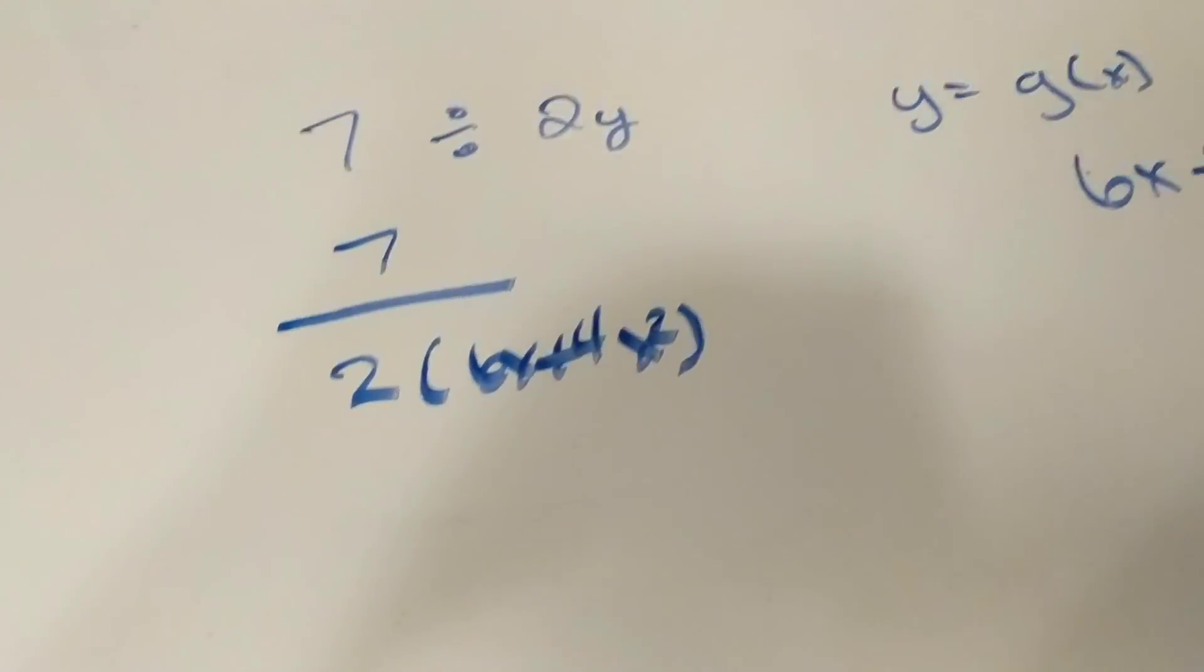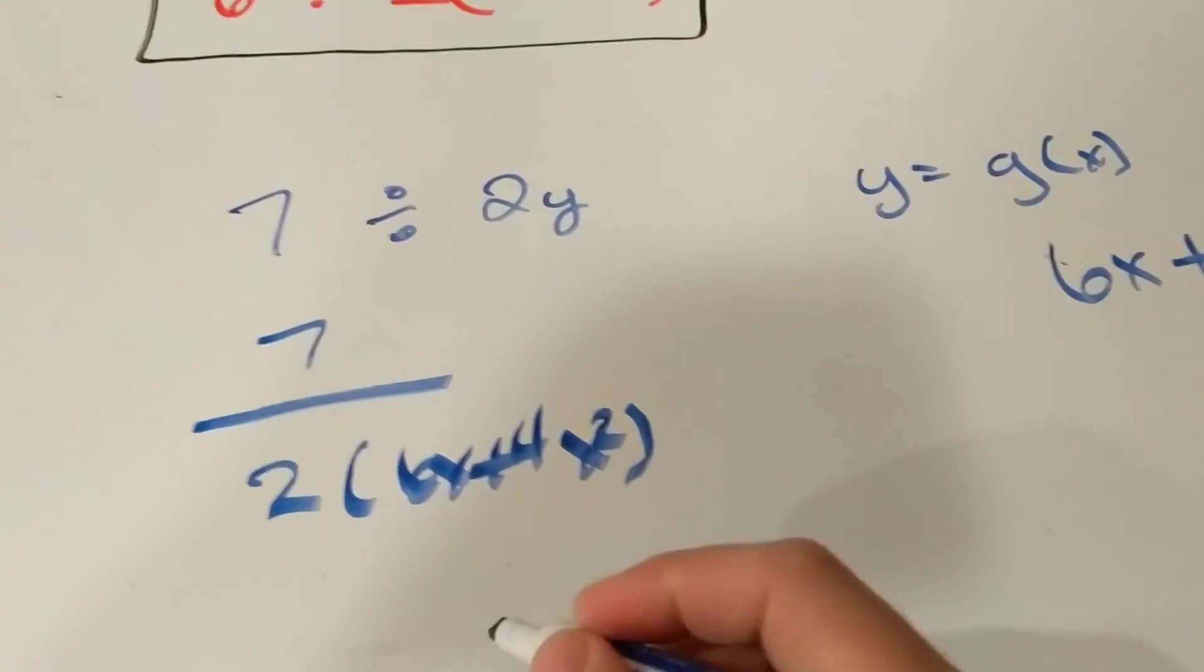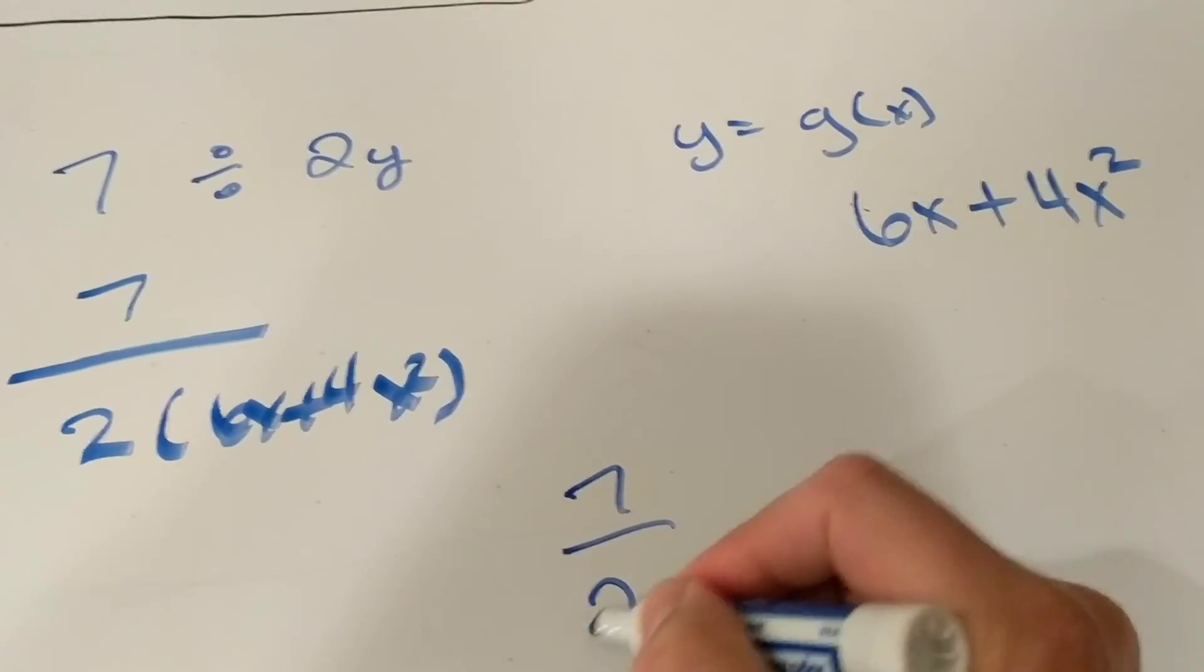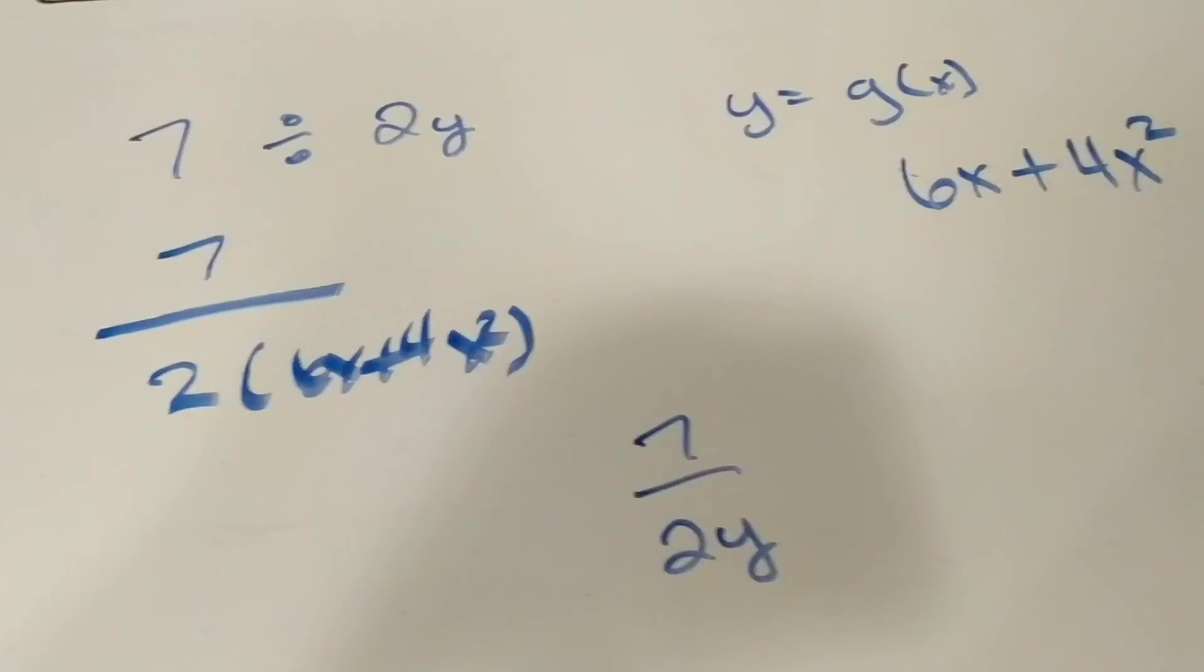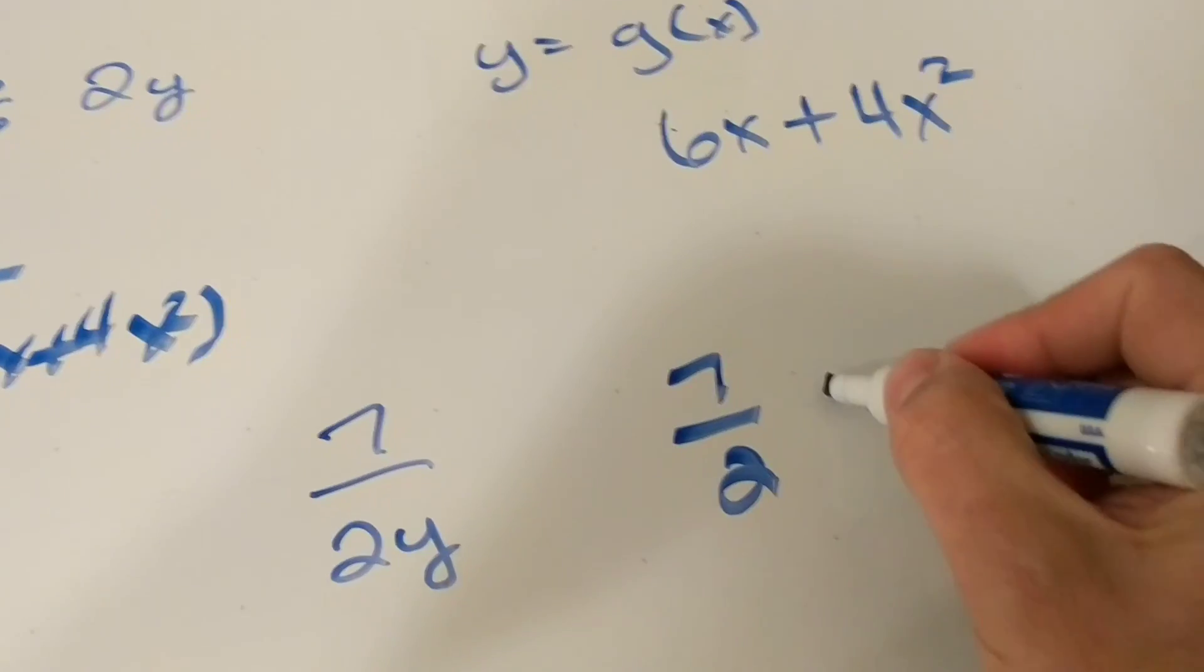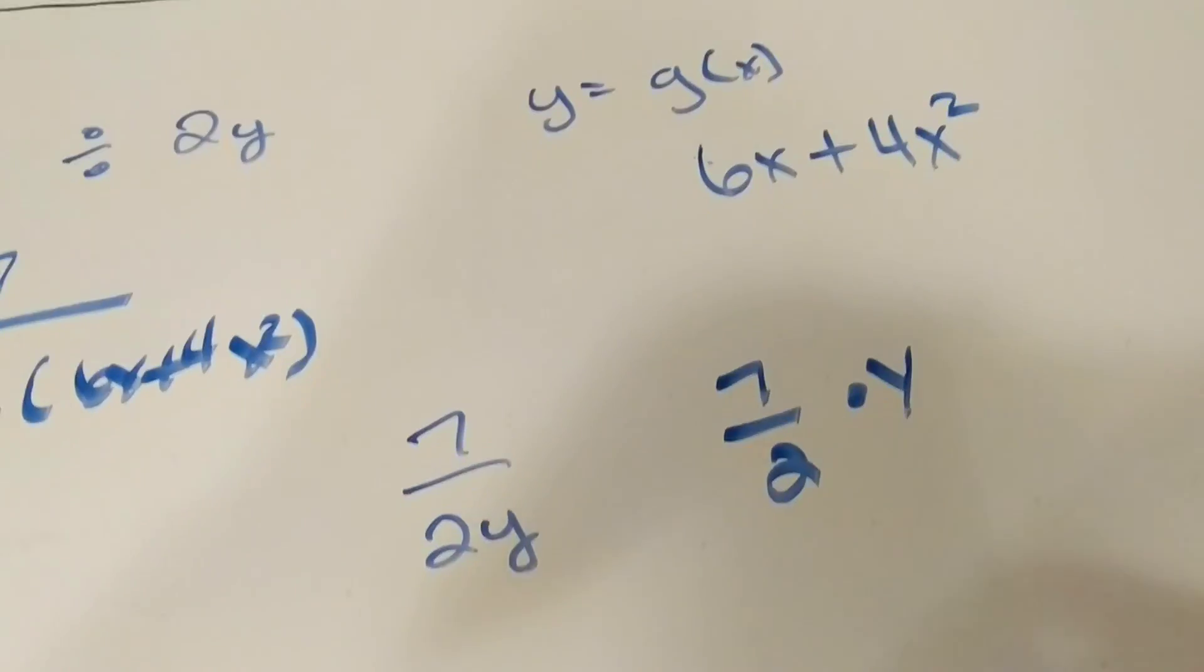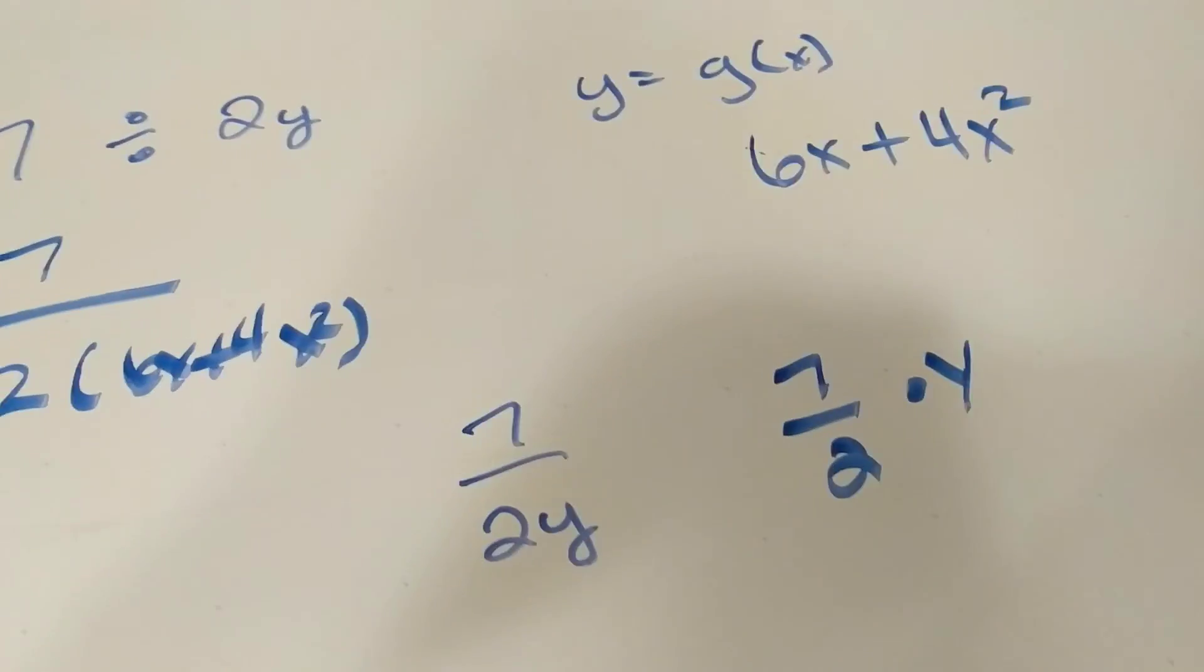And if you were to just say 7 over 2y, then you would be correct. Writing 7 over 2 times y would be incorrect because that is not at all what this is saying. It's saying that there are 2y's.